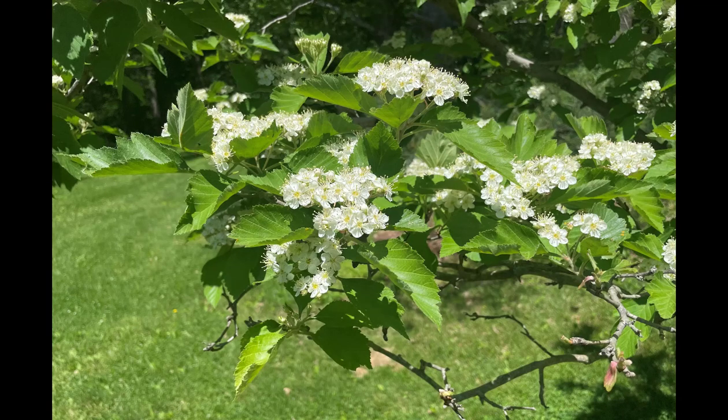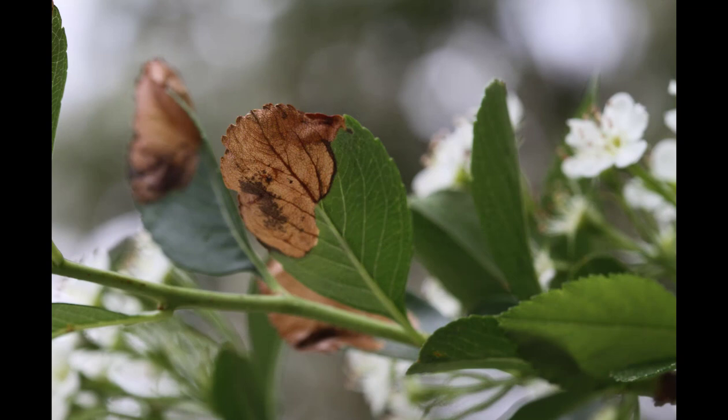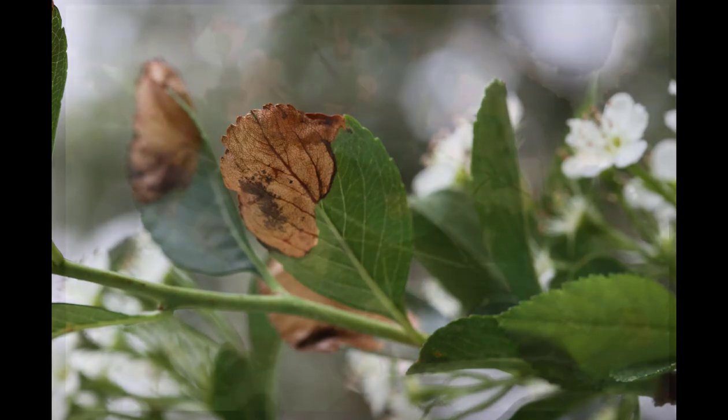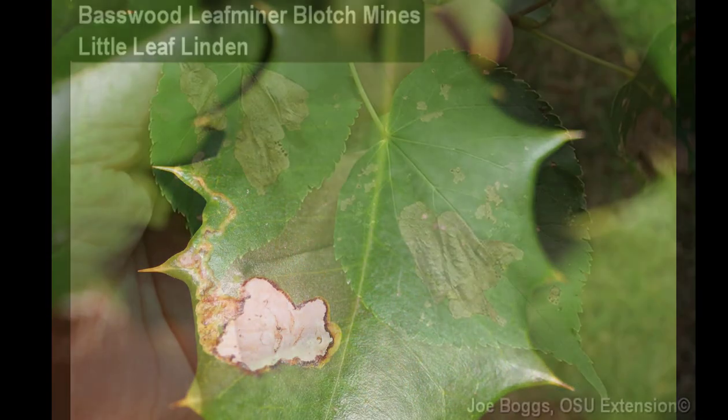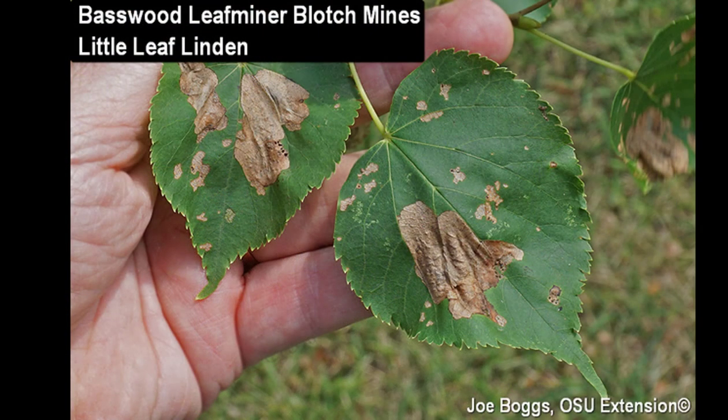Although soil-applied systemic insecticides like imidacloprid, dinotefuran, and clothianidin are quite effective at controlling most leaf miners, they can also be quite toxic to pollinators. For this reason, their use needs to be avoided on trees and shrubs that are highly attractive to pollinators and prone to leaf miners. These include hawthorn leaf miner on hawthorn, birch leaf miner on birch, holly leaf miner on holly, linden leaf miner, and the elm flea weevil.